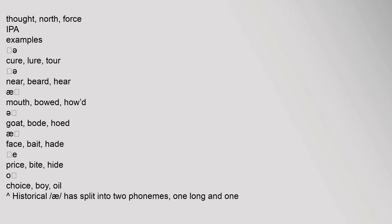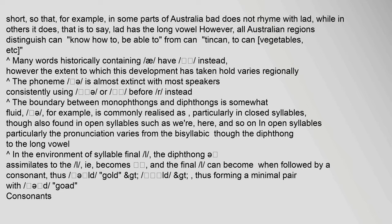Historically, the vowel 'a' has split into two phonemes, one long and one short, so that in some parts of Australia 'bad' does not rhyme with 'lad', while in others it does — that is to say, 'lad' has the long vowel. However, all Australian regions distinguish 'can' (know-how, to be able to) from 'can' (tin can, to can vegetables, etc.).